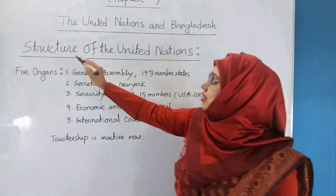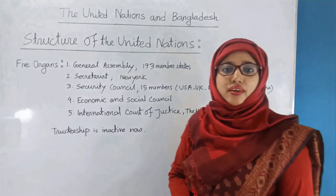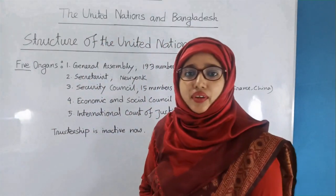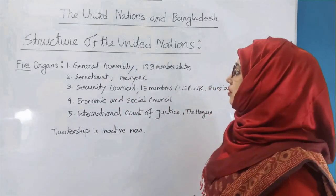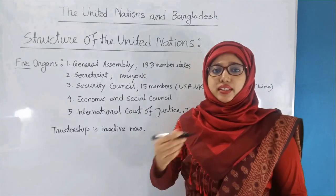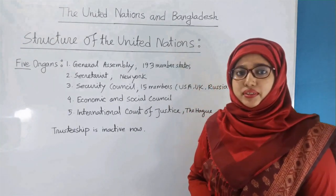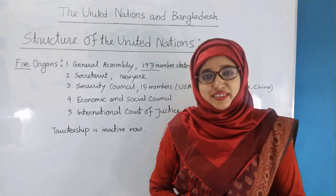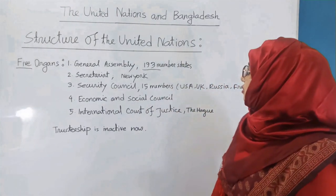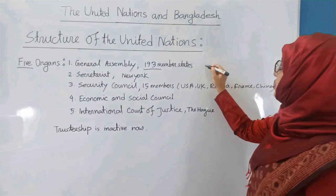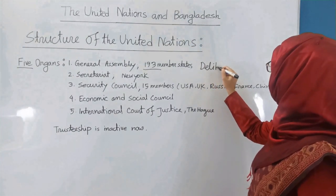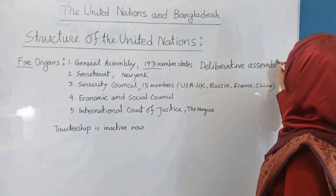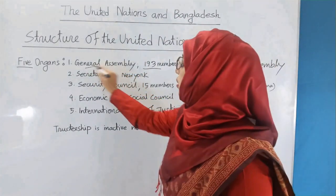Now I will discuss the structure of the United Nations. There are five organs in the United Nations to conduct its activities. Number one: the General Assembly. There are 193 member states in the General Assembly. The General Assembly is also called the Deliberative Assembly.